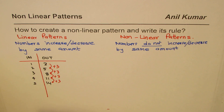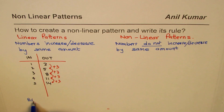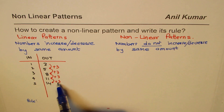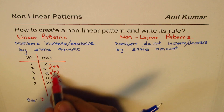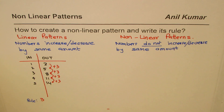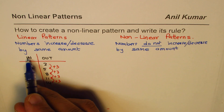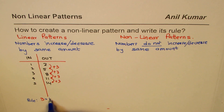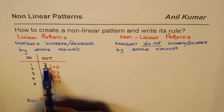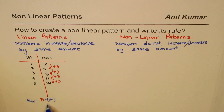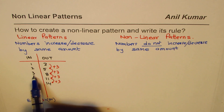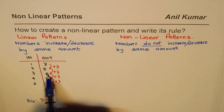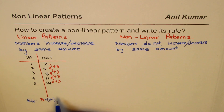Now let's write the rule for this pattern. Since it is increasing by three, that number is important. We start with three times the input. But three times one gives three, not two — and three times two gives six, not five. Each result is one more than we need.